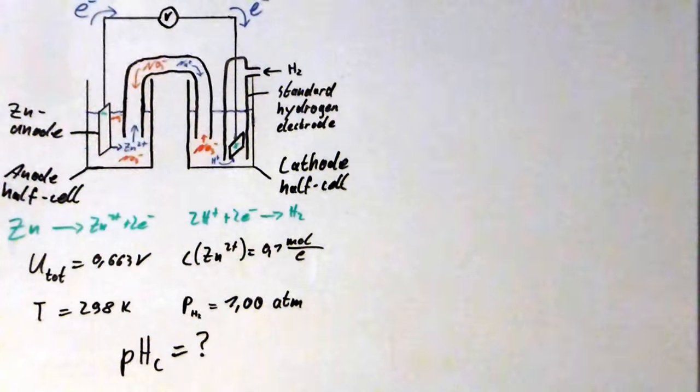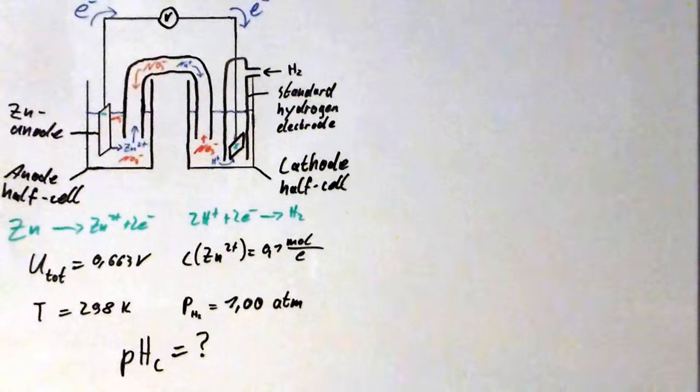In this video I will show you how to calculate the pH level of a standard hydrogen half cell compared to a zinc anode half cell under standard conditions.